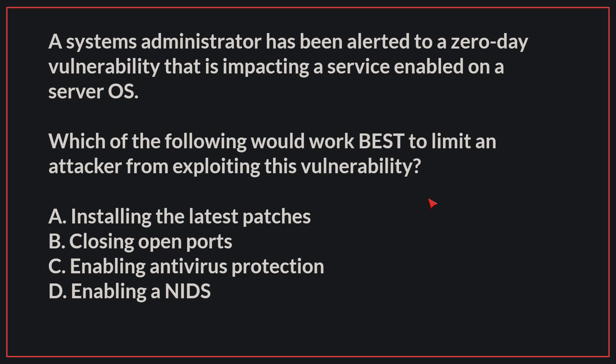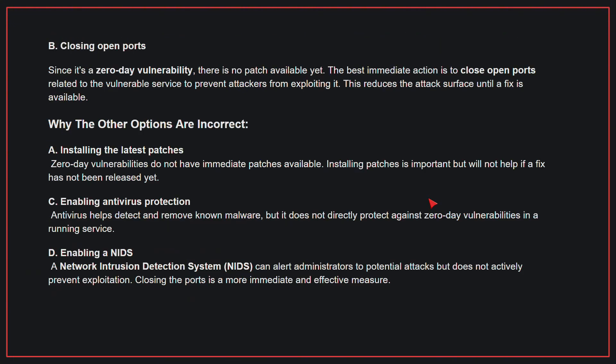A systems administrator has been alerted to a zero-day vulnerability that is impacting a service enabled on a server OS. Which of the following would work best to limit an attacker from exploiting this vulnerability? The correct answer is B, closing open ports. Since it's a zero-day vulnerability, there is no patch available yet. The best immediate action is to close open ports related to the vulnerable service, reducing the attack surface until a fix is available.